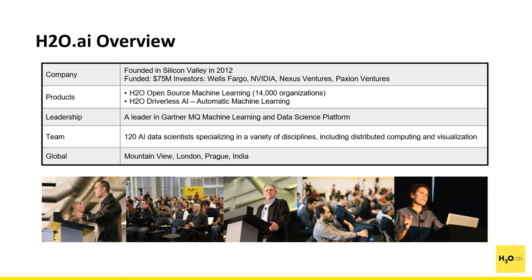This includes enterprises, governments, and universities all across the world, and nearly half of the Fortune 500 are using the open source platform. We are a venture-backed company, and some of our lead investors include Wells Fargo, NVIDIA, Nexus, and Paxia. We were named as a leader in the Gartner Magic Quadrant for machine learning and data science platforms. We are about 120 folks right now, including some of the world's best AI experts — including Kaggle Grandmasters. There are only about 100 Grandmasters in the whole world, and H2O has about seven of the top 10 of the top 100.